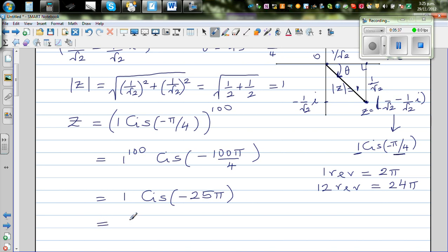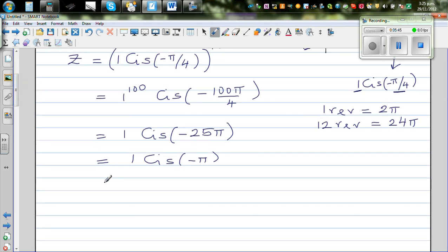So this is the same as saying 1 cis minus pi. And cis minus pi is the same as writing 1 times cos negative pi plus i sine negative pi.